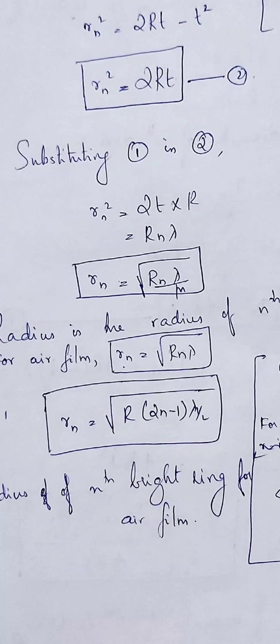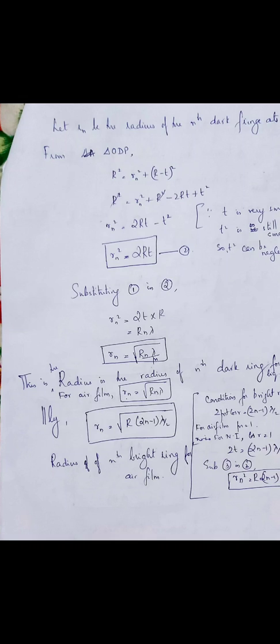So this is Newton's rings. We have derived the radius of any bright ring and any dark ring. I hope this session is clear to all of you. If you have any doubt, please do consult. Thank you.